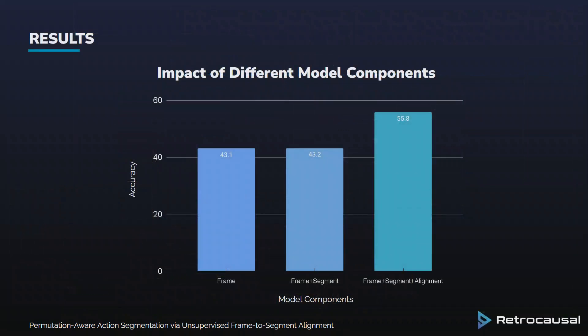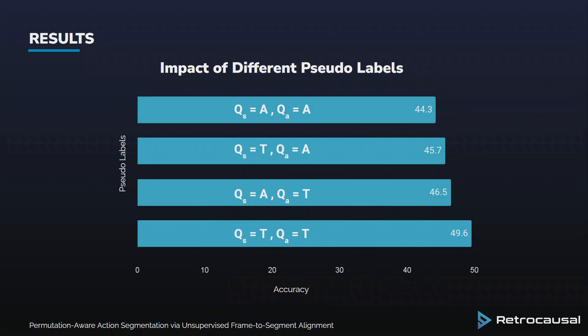Let us take a look at some experimental results. We first evaluate the performance of each component in our model. We have three main components: the frame-level module, the segment-level module, and the alignment-level module. Using only the frame-level module yields 43.1% MOF accuracy. Adding the segment-level module on top obtains 43.2% MOF accuracy. Finally, adding the alignment-level module to refine the frame-level prediction improves performance and achieves 55.8% MOF accuracy. We also evaluate the impact of different pseudo-labels for our segment-level and alignment-level modules — using either the fixed-order transcript or the permutation-aware transcript T. Using the permutation-aware transcript T for both modules yields the best overall results.